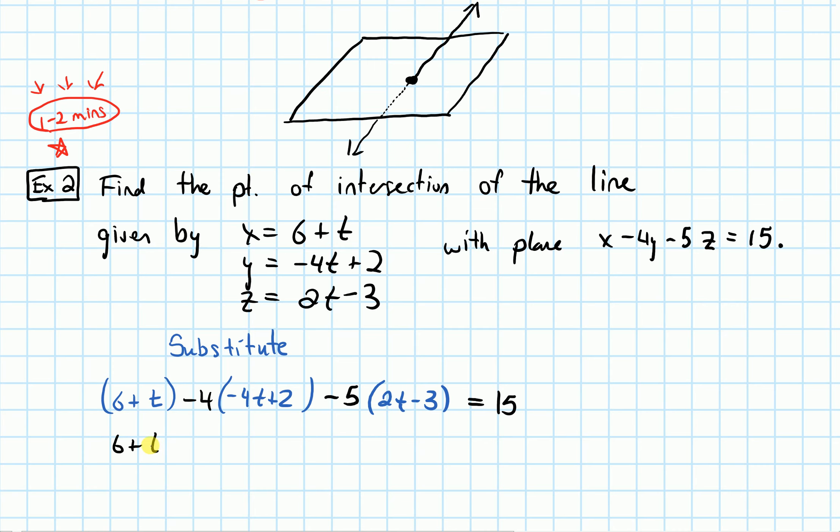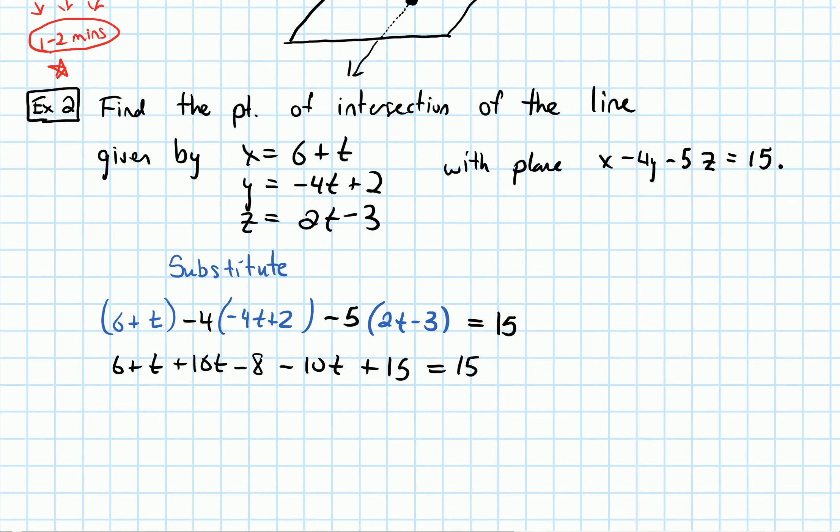So we have 6 + t. Distribute the minus 4 to get +16t - 8. Distribute the negative 5 to get -10t + 15 = 15. We can cancel out the 15s. And simplifying now,